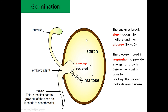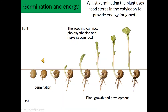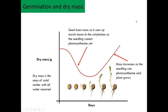This allows respiration of the plant to release energy to allow it to grow and make new substances. You need this store because the plant cannot photosynthesize at this point. Over time, once it reaches the light and soil, the seedling will photosynthesize and make its own food, so the seed store isn't as important anymore and the plant will use up all this food storage. The seed loses dry mass as it uses up its starch stores, then mass increases once the seedling can photosynthesize and it starts to grow.